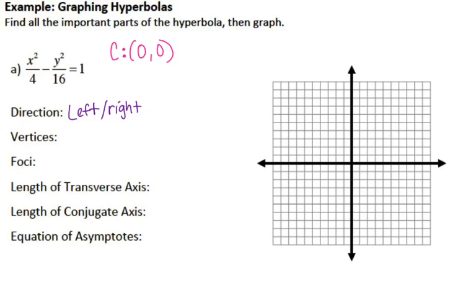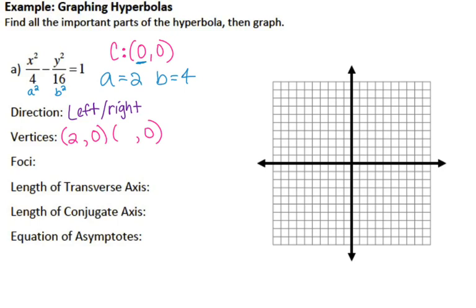Unlike ellipses where the bigger number underneath the fraction tells you the direction, for hyperbolas it's which variable comes first. Since X is first, this one opens to the left and to the right. Your vertices use A, but for hyperbolas your A squared is always first. So A squared is 4 and B squared is 16, meaning A equals 2 and B equals 4. If I'm moving left and right, that changes my X coordinates, so my Y coordinates stay the same as my center. I take the X coordinate of my center and add and subtract A: 0 plus 2 gives me positive 2, and 0 minus 2 gives me negative 2. So I have my vertices at (2, 0) and (−2, 0). Let's go ahead and graph that.